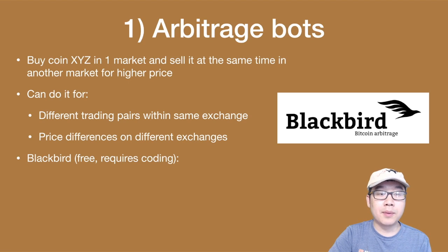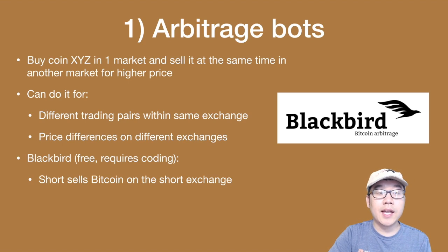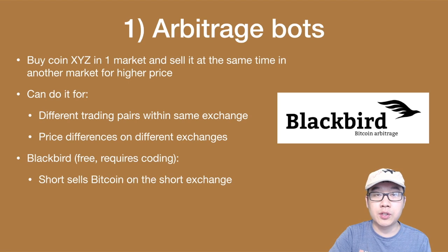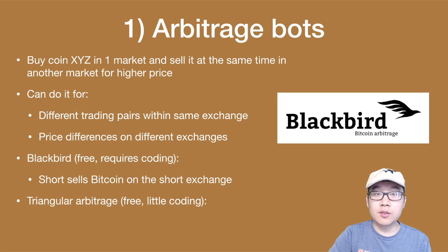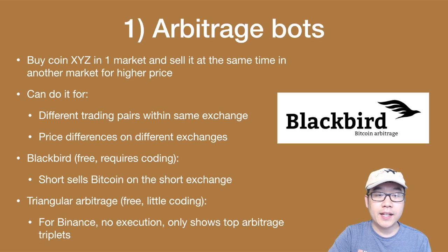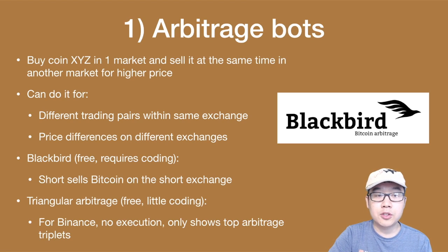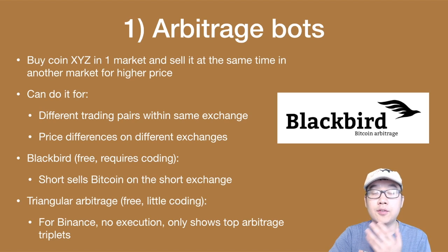A popular arbitrage bot is called Blackbird — it's free, but does require some coding. It basically short sells Bitcoin on the exchange where you go short. There's also triangular arbitrage, also free, with just a little bit of coding and mainly for Binance. It doesn't have an actual execution component — it only shows you the top arbitrage triplets available, and then you'd have to execute those yourself or with your own code.